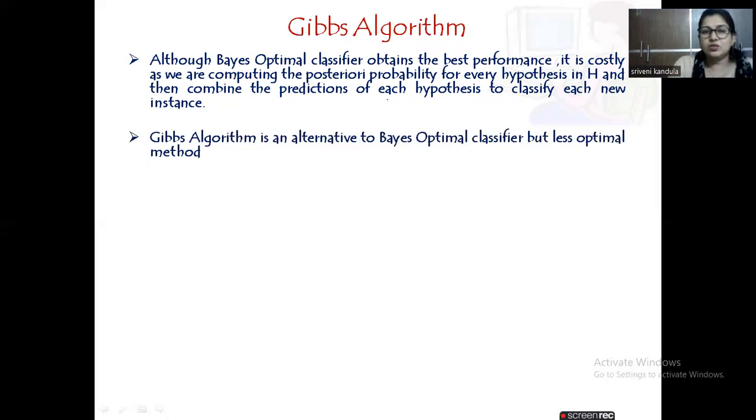Hence, we are going with a less optimal Gibbs algorithm. This is an alternative to Bayes Optimal Classifier. Sometimes it may work better depending on the hypothesis you are choosing randomly. Sometimes it can be worst also. Let us see the algorithm.